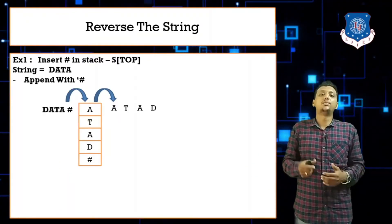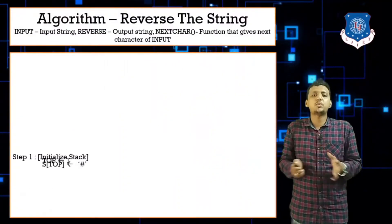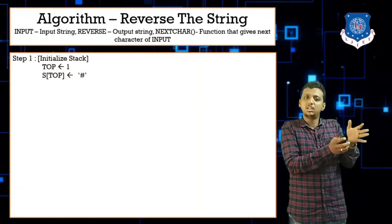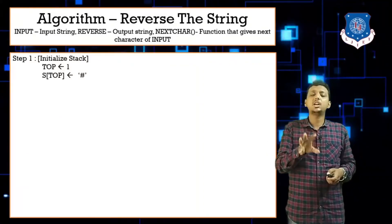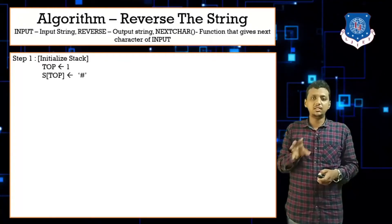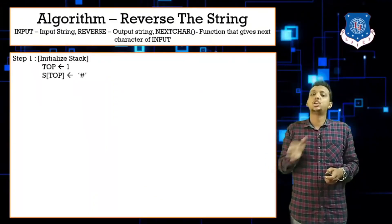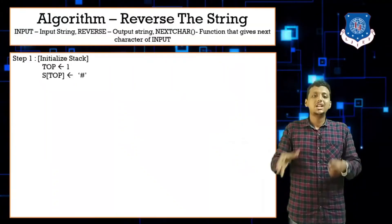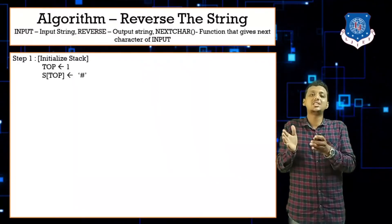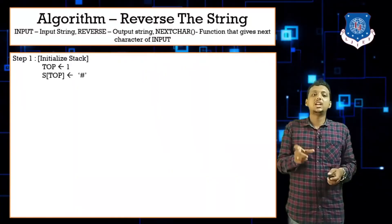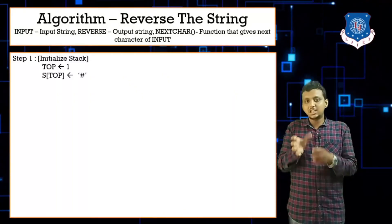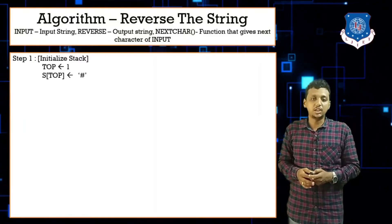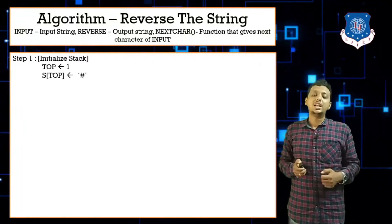The algorithm for reversing a string is essentially the same as decimal to binary conversion. We use the next_character function — already used in the infix to postfix algorithm — which returns the next character from the input string. Define: reverse (output string, initialized to null) and input (input string variable). Initialize the stack with hash: top = -1, S[top] = hash.